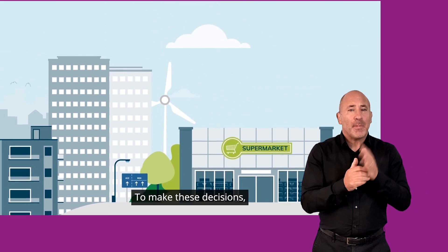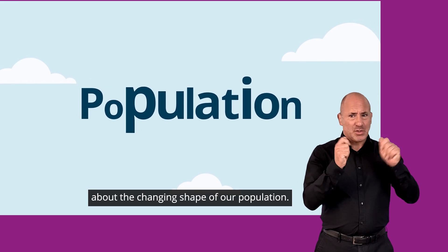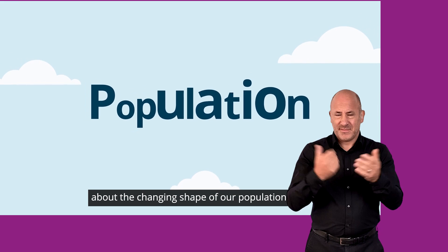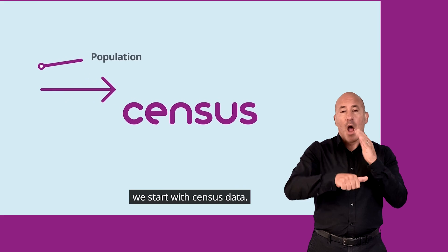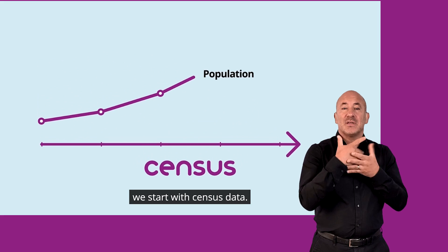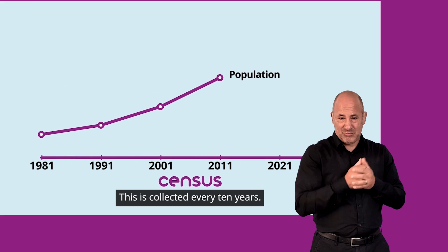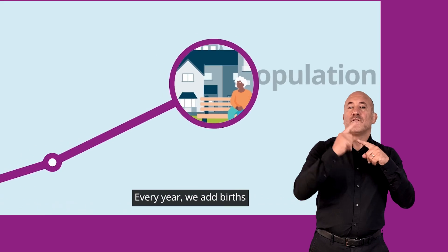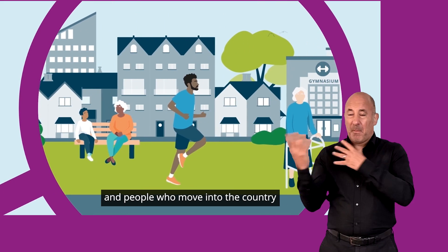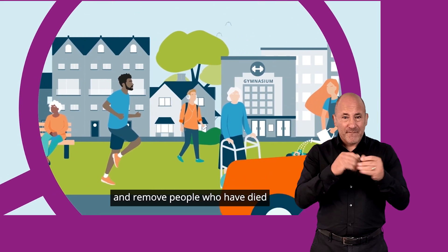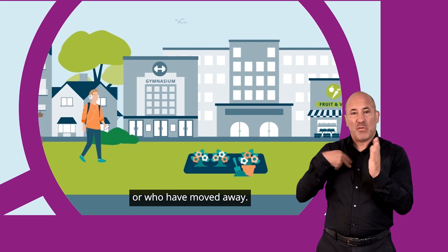To make these decisions, people need the most up-to-date information about the changing shape of our population. To estimate the population, we start with census data, which is collected every 10 years. Every year, we add births and people who move into the country or local area, and remove people who have died or who have moved away.